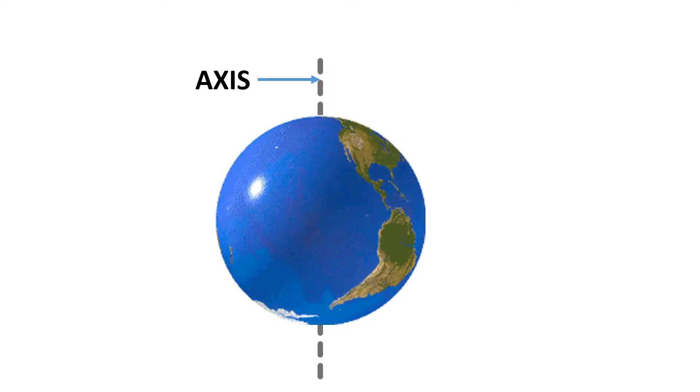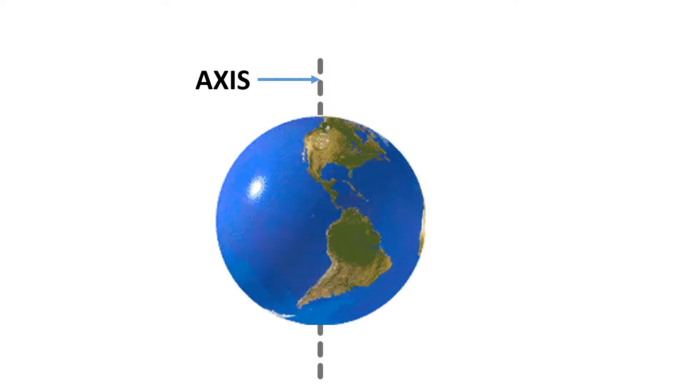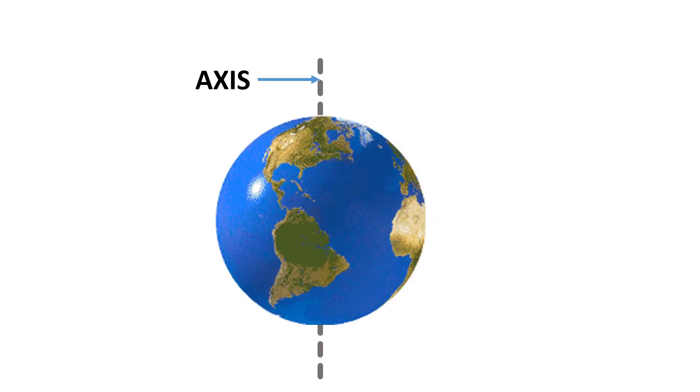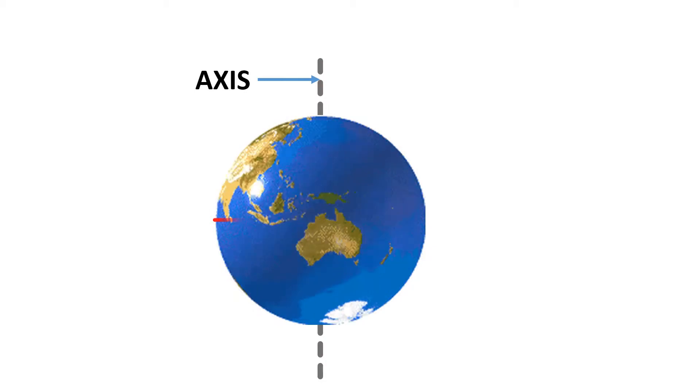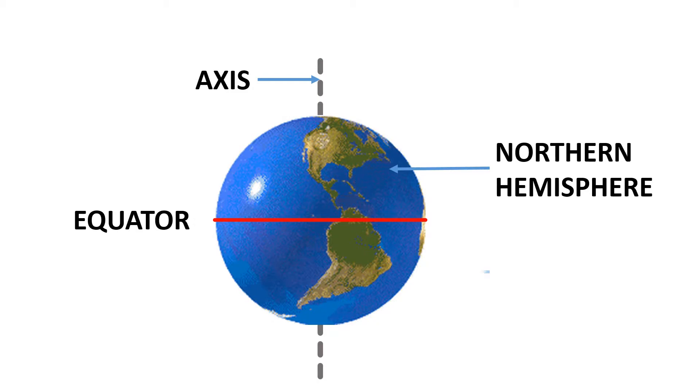Axis is an imaginary line that goes through the north and south pole. Earth rotates on its axis every 24 hours. There is another imaginary line called equator which divides the Earth into northern and southern hemispheres.